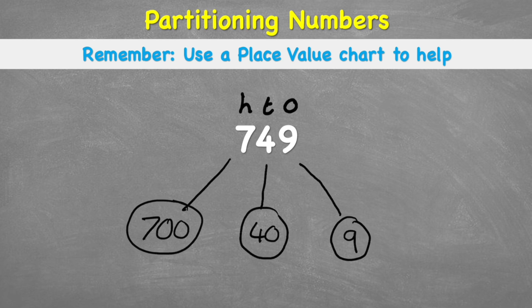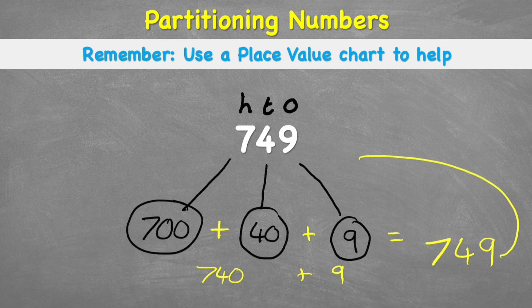Let's make sure I've done that correctly by adding them all together again and see if I get back to my original number. 700 plus 40 is 740. 740 plus my 9 equals 749. Is that the same answer? Yes, it is. We've done it correctly again.